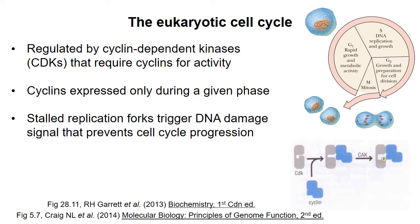Replication is confined to the S phase of the cycle, and it's important that replication is completed before the cycle continues. Stalled replication forks prevent progression of the cycle. It's also important that replication is not initiated more than one time at any replication origin in a given cell cycle.